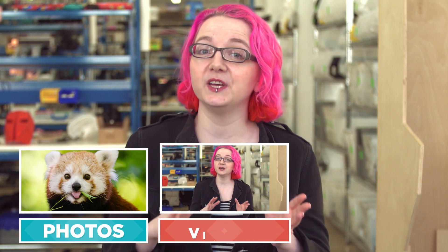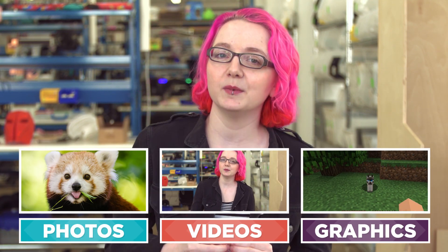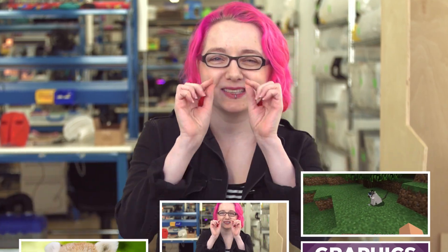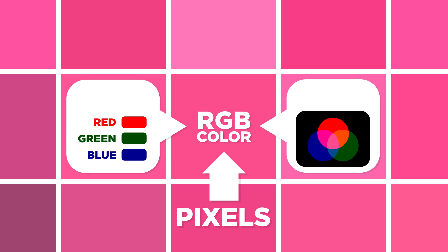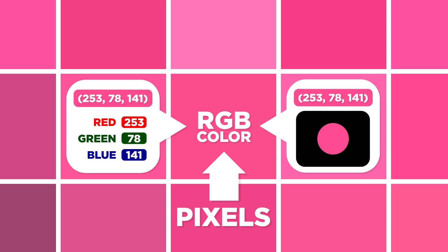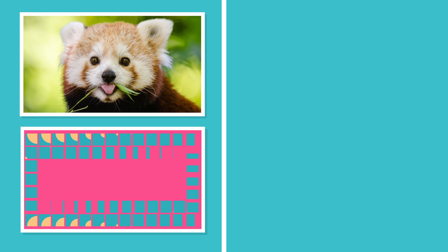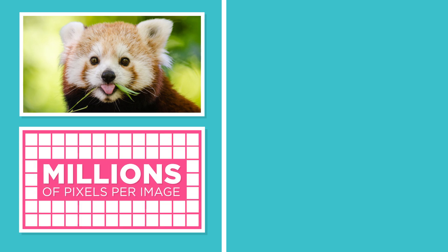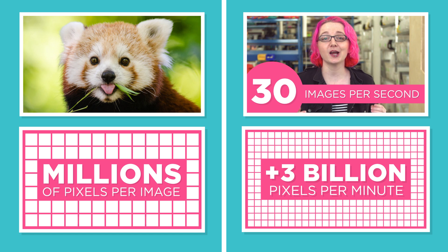Now, let's consider photos, videos, and all the graphics you see on a screen. All of these images are made out of teeny dots called pixels, and each pixel has a color. Each of the colors can be represented with numbers. When you consider that a typical image has millions of these pixels, and a typical video shows 30 images per second, we're talking about a lot of data here.